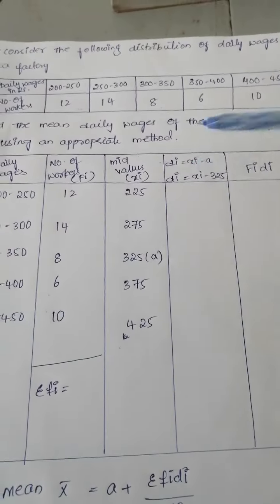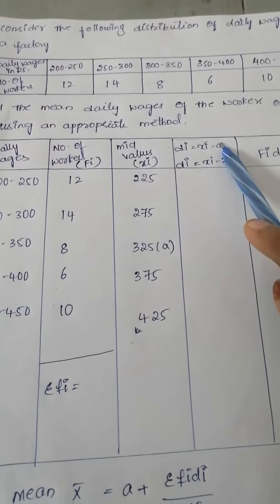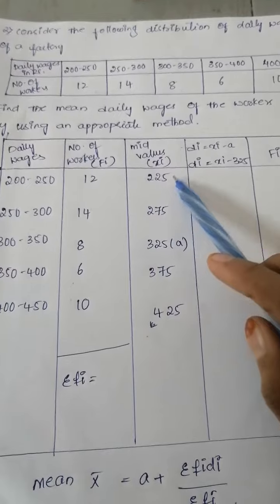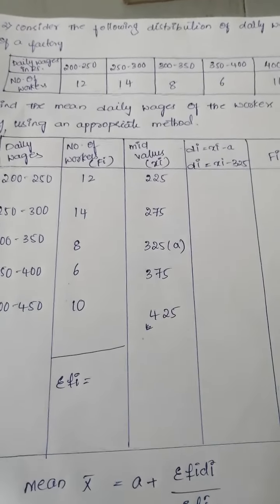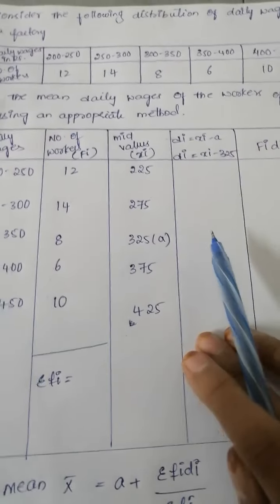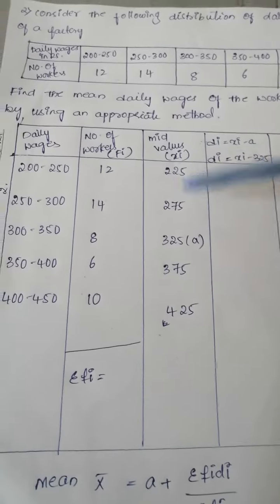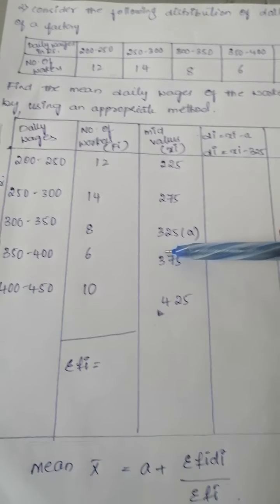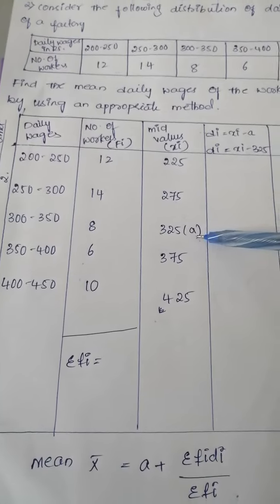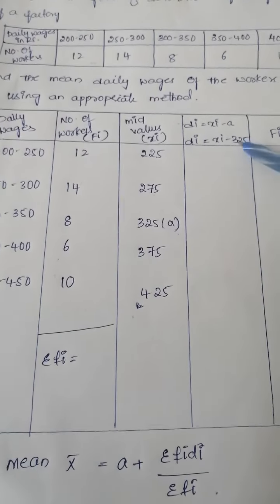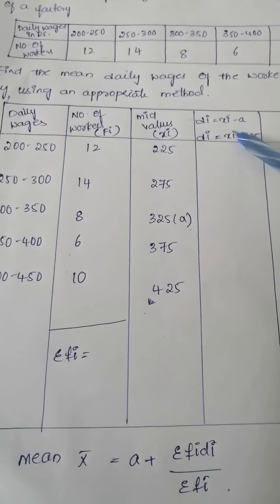Next, coming to our Di value. We need Xi and A value. Xi means mid value. What is A? A means assumed value. How to find the assumed value? In the mid values, find the middle number. For example, how many numbers? 1, 2, 3, 4, 5. Middle number is 325. It is called assumed value. We are assuming, that's why it's the A value. Now to find D value, we subtract 325 from the mid value.